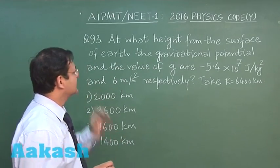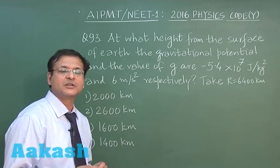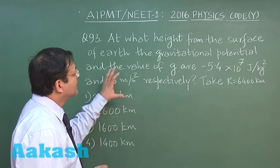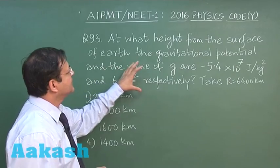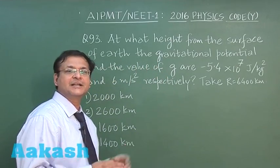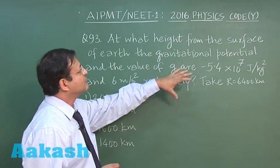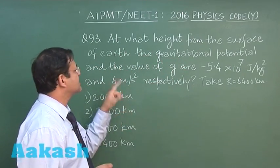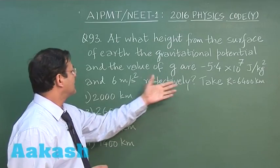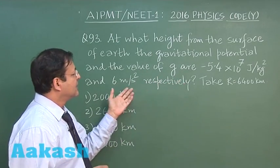In the next question, that is question 93 which is based on the chapter gravitation, you have been given the value of gravitational potential and the value of acceleration due to gravity. At what height from the surface of the earth are the gravitational potential and the value of g these given values respectively?